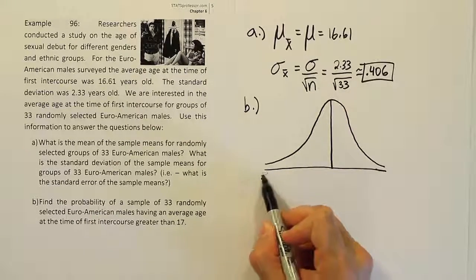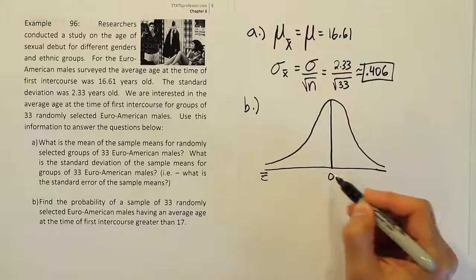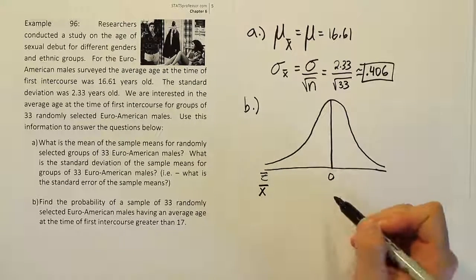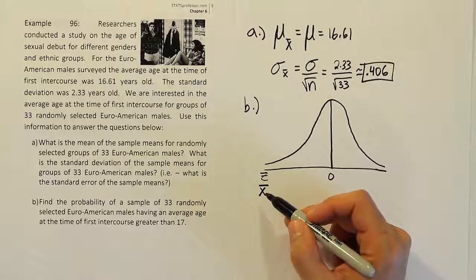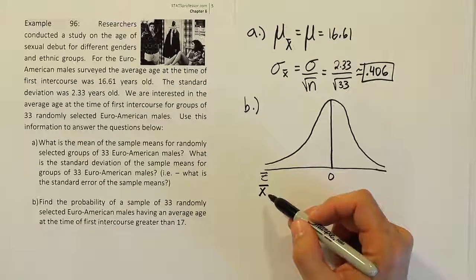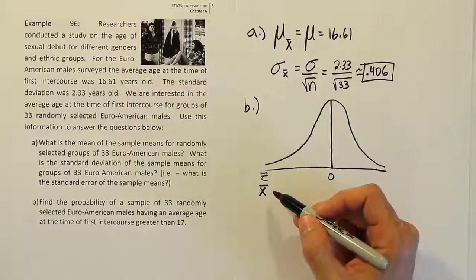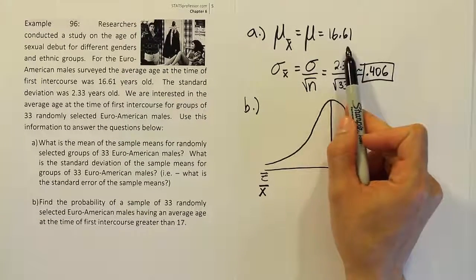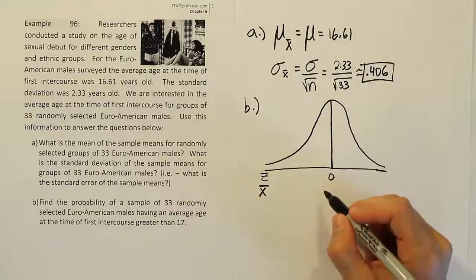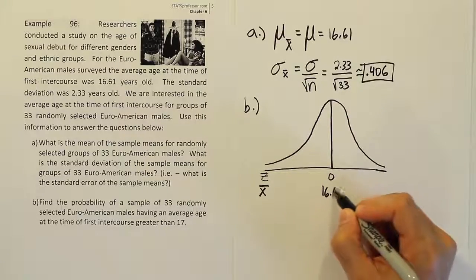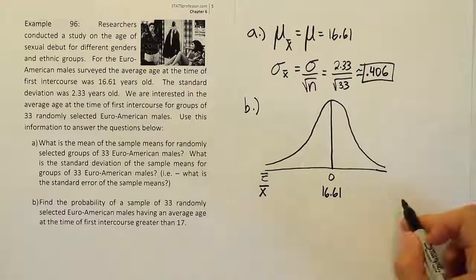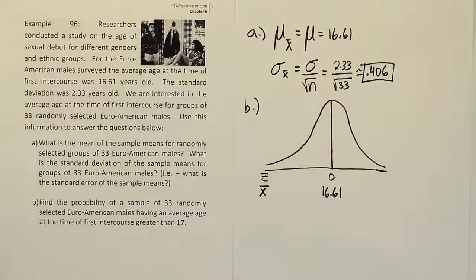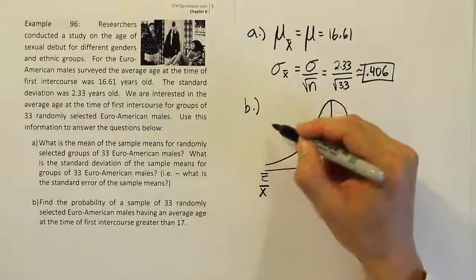So what we're going to label down here is the traditional Z-axis, centered at zero. And instead of an X-axis, I'm going to use an X̄ axis. X̄ meaning essentially the sample mean that we're talking about in this problem. The thing here that we have is the average, the mean for X̄. So that's 16.61. We're going to center that here because if this is an X̄ number line and the mean for X̄ is 16.61, it should go right in the center of the curve.